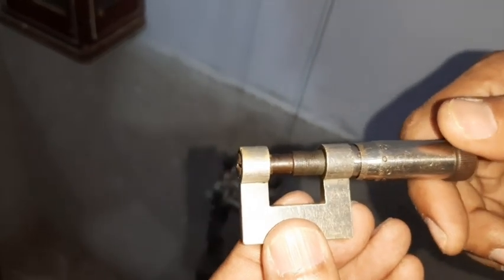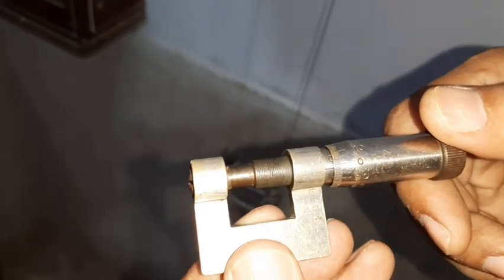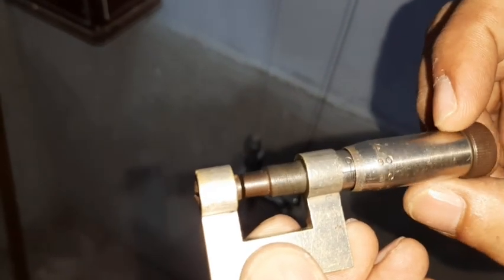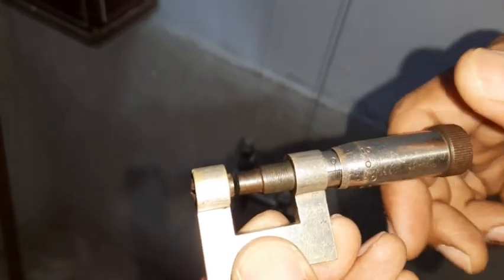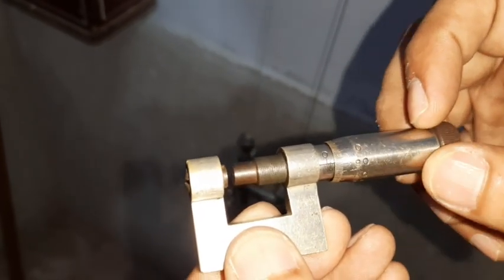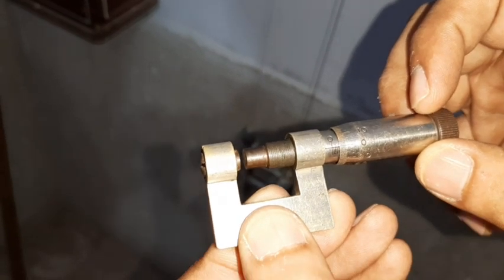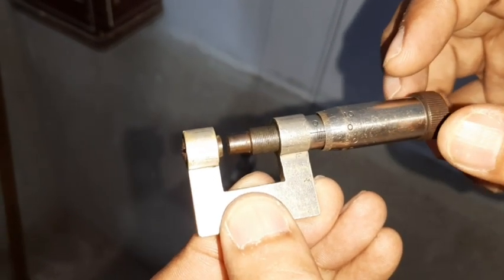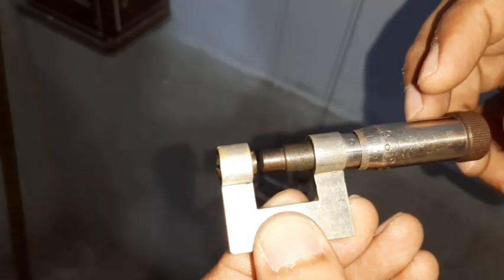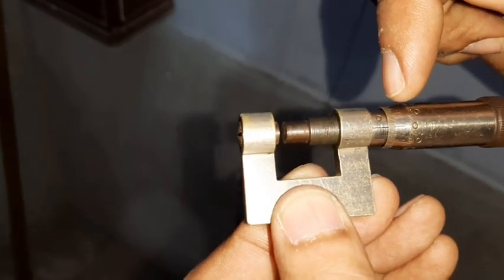Now we will find the least count of this screw gauge. Taking one turn, two turns, three turns and four turns. We are seeing that by rotating four circular turns, the distance moved on the linear scale is two millimeters. So let us calculate the least count.